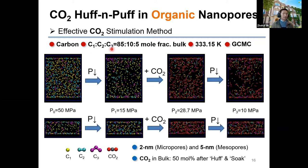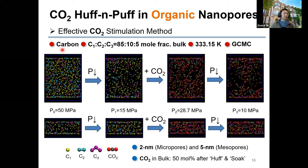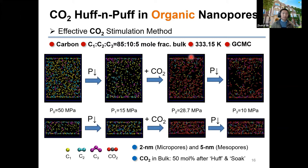We considered two pore sizes — 2 nm and 5 nm — representing micropores and mesopores. For organic nanopores, we used a simplified carbon nanopore system with LJ-like potentials. Initially at 50 MPa, when we drop pressure, we see more C3 (the heavy component) on the surfaces in mesopores. After CO2 injection and soaking, CO2 dominates on the surface. For C1, bulk and surface densities both reduce with pressure drop, while during CO2 huff-and-soak, surface C1 is reduced but the middle-pore region is not significantly affected.